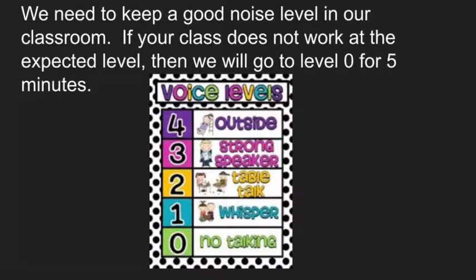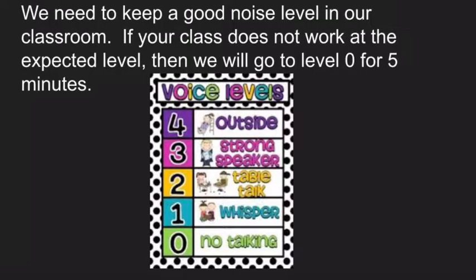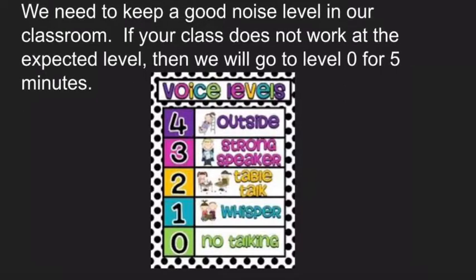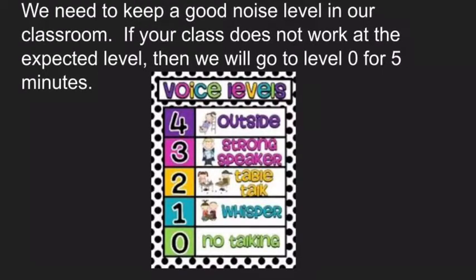If I say you can talk at a level 1 voice, that's your whisper voice. A whisper sounds like this. If I say you may speak at a level 2 voice, that's called your table talk voice. That's when you're speaking softly to the people that are working with you at your art table or sitting next to you. Your table talk voice would sound like this.